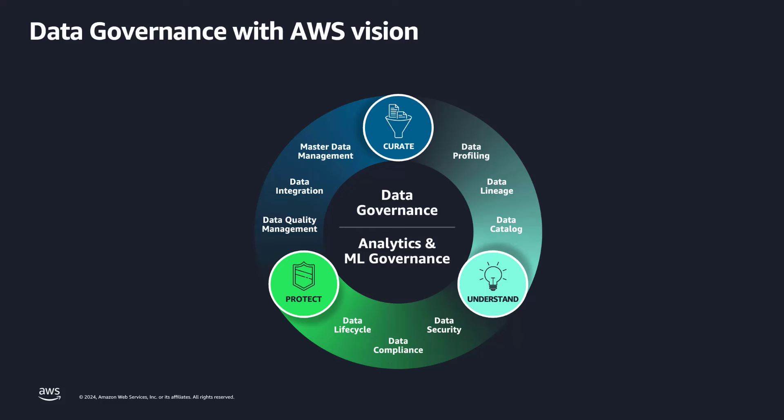This is data governance with the AWS vision. It has three main pillars: curate, protect, and understand. We are going to base today's session on the understand pillar, specifically the data catalog component.